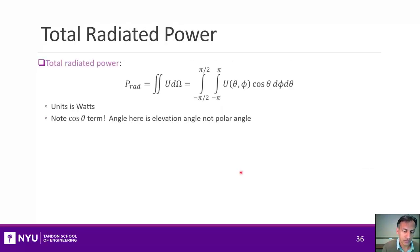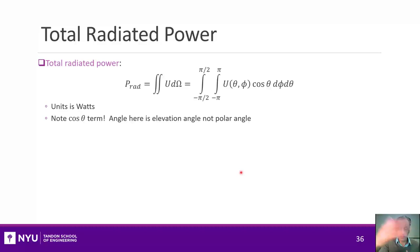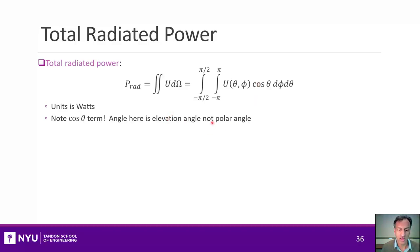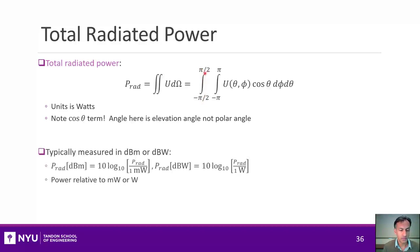The total radiated power is found by taking a sphere at some far radius around the antenna and integrating the total power captured on that sphere — it's the integral over all solid angles of the radiation intensity. Note there's a cosine theta term in the differential because I'm writing it with the elevation angle (not inclination), and it goes from −π/2 to π/2. This is typically measured in dBm or dBW.